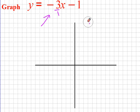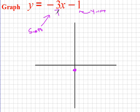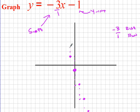Alright, here's the solution. My slope is negative 3 over 1 and my y-intercept is negative 1, so I start at negative 1. My slope is negative 3 over 1, meaning my rise is negative 3 and my run is 1. So I go down 3, over 1 — down 3, over 1. I can keep doing this. Going the opposite direction: up 3 but then left 1 to maintain the straight line.